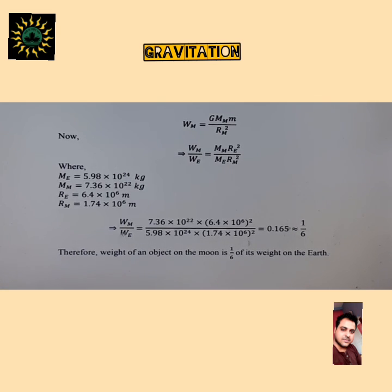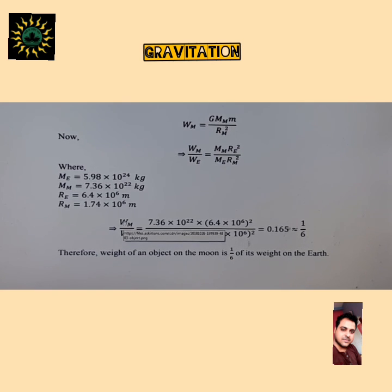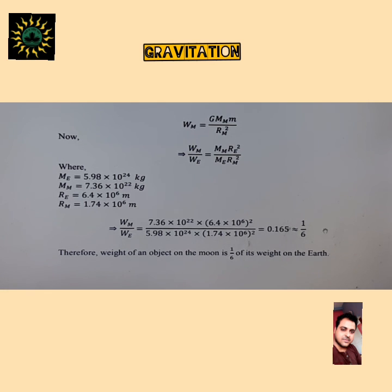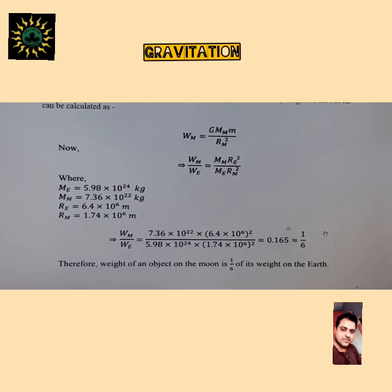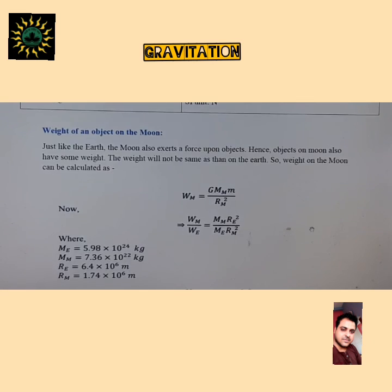Therefore, the weight of an object on the Moon's surface is one-sixth of its weight on the Earth's surface. For example, if an object weighs 36 kg on Earth, it will weigh only 6 kg on the Moon — reduced by one-sixth. That concludes today's class. Copy these notes into your notebook as they are important for the examination.